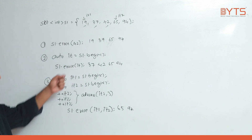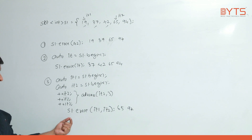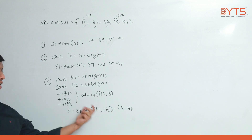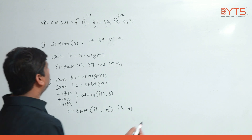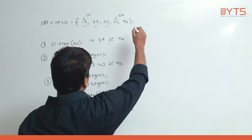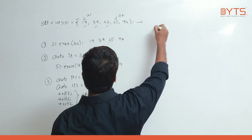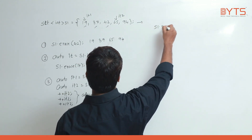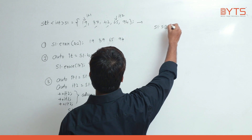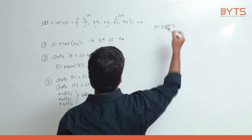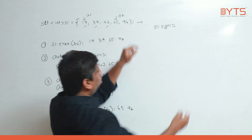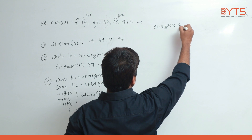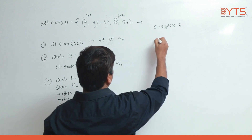So we have seen erasing a particular element by value, erasing at a given iterator, and erasing a range of values. Next let's see s1.size() — how many elements are there: one, two, three, four, five. Answer is five.